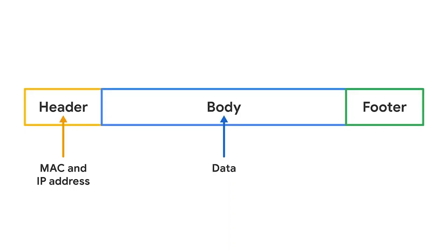Packets include a header, which contains the sender's and receiver's IP addresses. Packets also contain a body, which may contain valuable information like names, date of birth, personal messages, financial information, and credit card numbers. Packet sniffing is the practice of using software tools to observe data as it moves across a network.